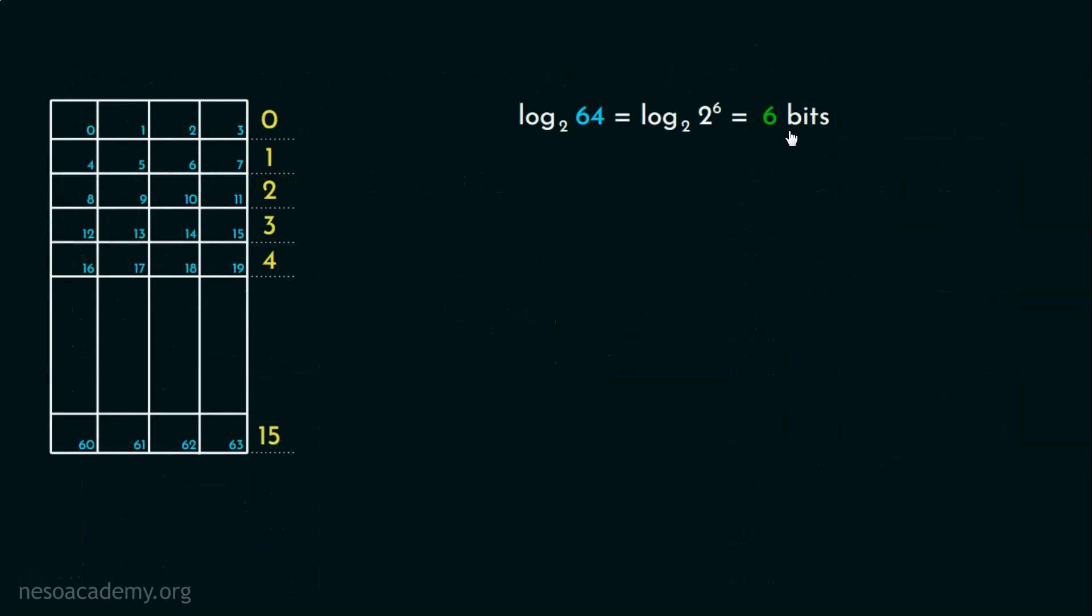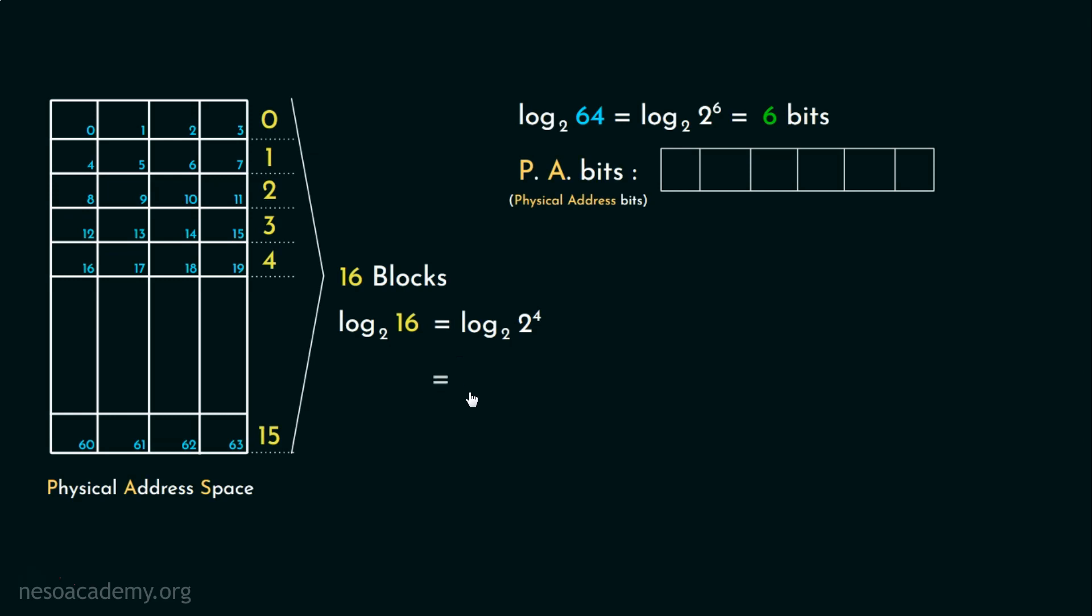These 6 bits are called PA bits or physical address bits. The reason behind that is the main memory is sometimes referred to as physical address space. And in this particular physical address space, there are 0 to 15, that is 16 blocks. In order to locate each one of them, we will be needing log 16 base 2, that is log 2 to the power 4 base 2, which is 4 bits. So the PA bits are split like, the most significant 4 bits are used for identifying the blocks, and the least significant 2 bits are used for addressing each word in each block.